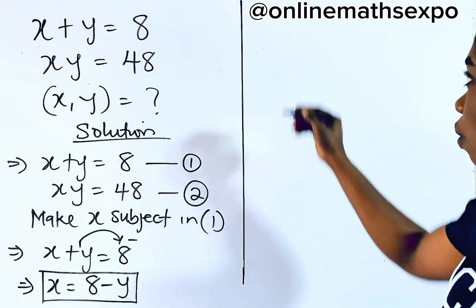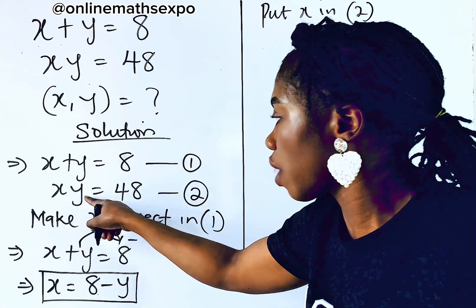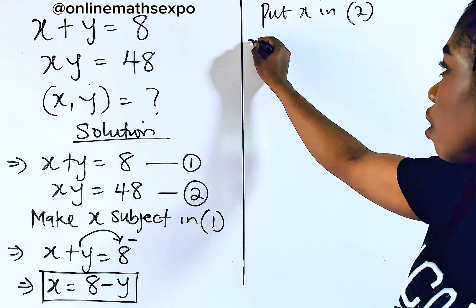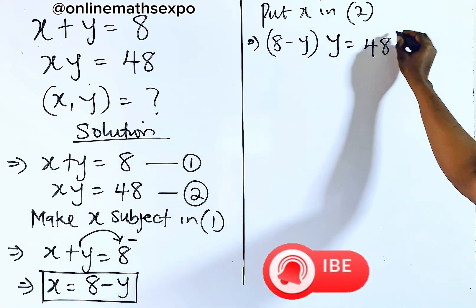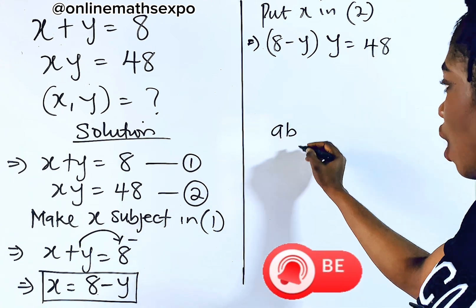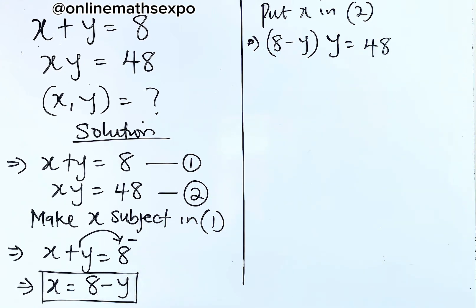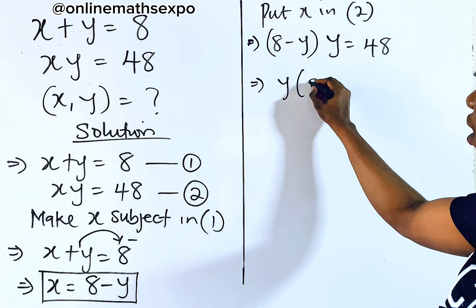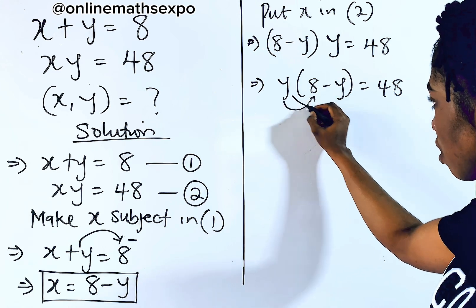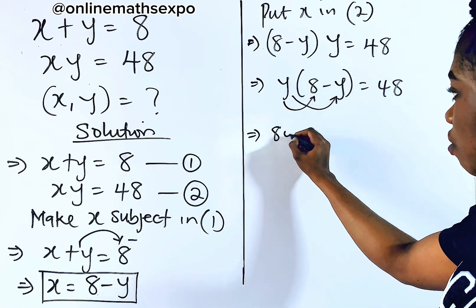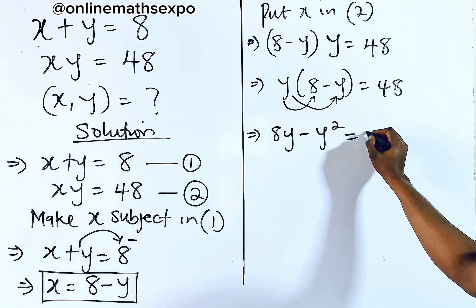Now, to do that, see what you have. We're going to put this X into equation 2. So we now have XY, so our X is 8 minus Y. So we have 8 minus Y for X, then Y is equal to 48. You also know that if you have AB, AB is also the same as BA — that's the commutative property. So this is also the same as Y times (8 minus Y) is equal to 48. Quickly distribute: Y multiplied gives you 8Y, and this multiplied gives you negative Y squared, and everything is equal to 48.